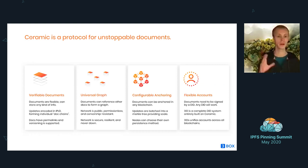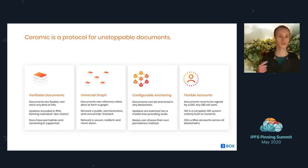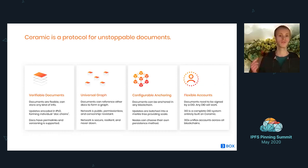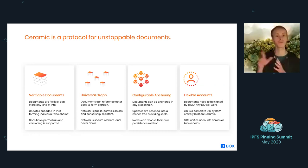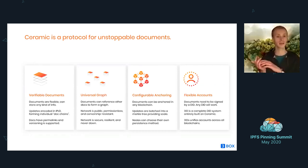A document has a permanent link that refers to the latest version of the document, but we can also refer to a specific version of a document. We can also construct a graph of documents, so I can have a document that points to another Ceramic document, and I can change that link later if I want to.